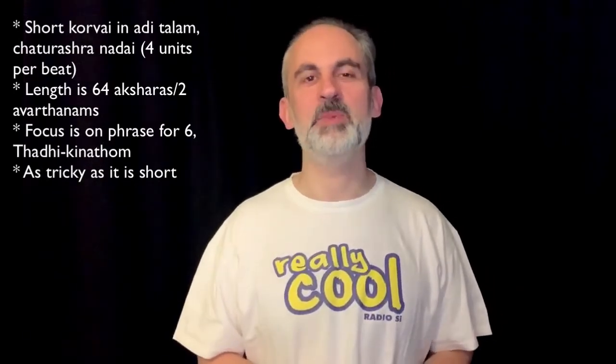So what was that, you ask? Well, that was a short and venomous corvai in adi-talam, chaturashra nadai, that means four subdivisions per beat, all very normal. The length is very short, only two avartanams or 64 aksharas. And the focus of this composition is on the phrase for six, the standard phrase for six, which is ta-di-ki-na-tom.